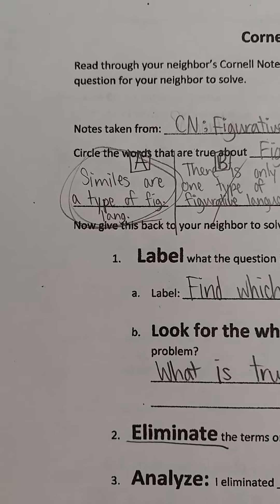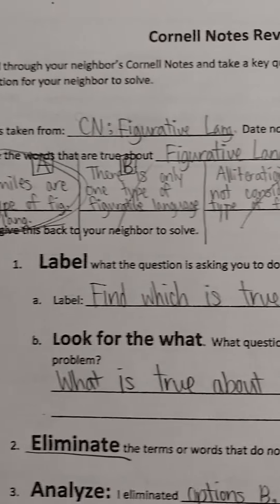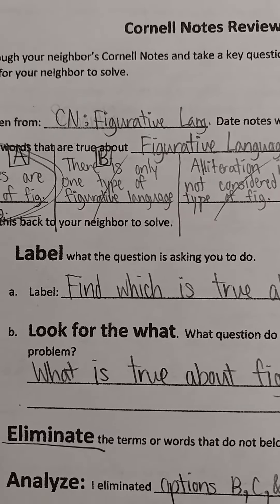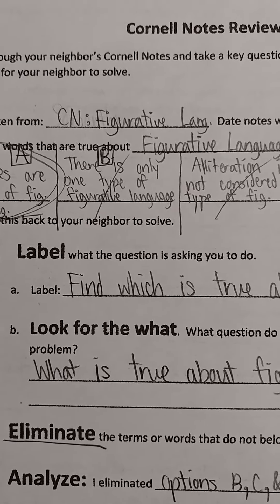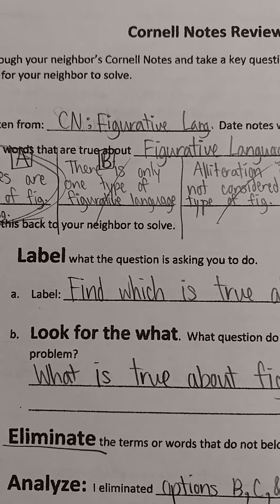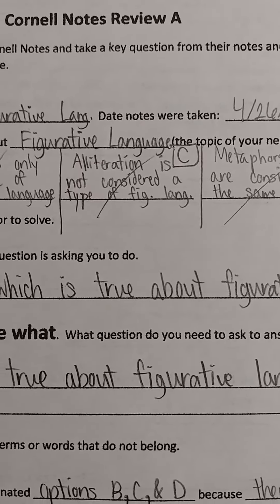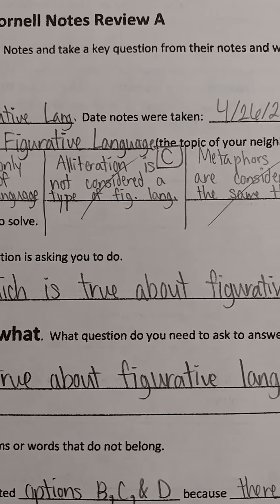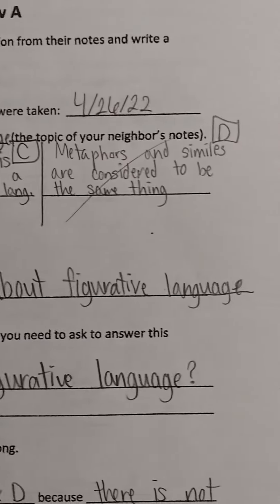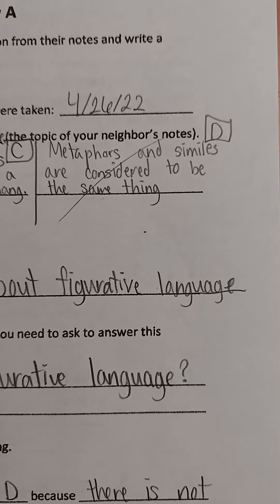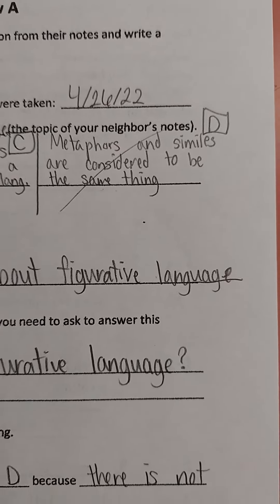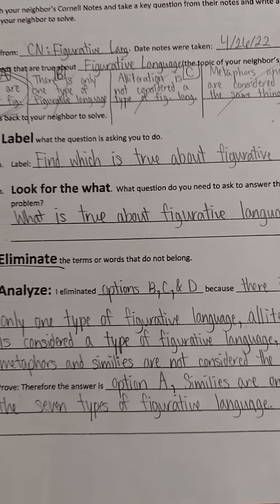A — similes are a type of figurative language. B — there is only one type of figurative language. C — alliteration is not considered a type of figurative language. D — metaphors and similes are considered to be the same thing.